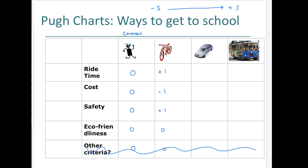For the car: ride time is definitely quicker than riding a bike, so that's a plus three. Cost is way more than riding a bike, so negative three. Safety is definitely safer than a bicycle, so positive three. Eco-friendliness is not so friendly, so negative three.